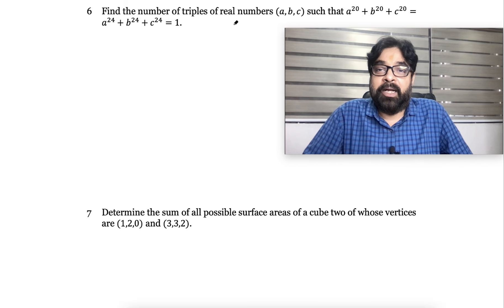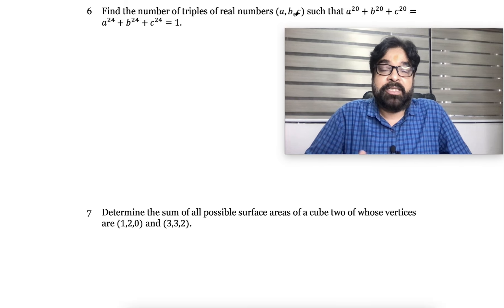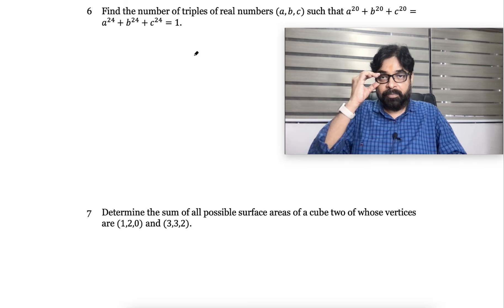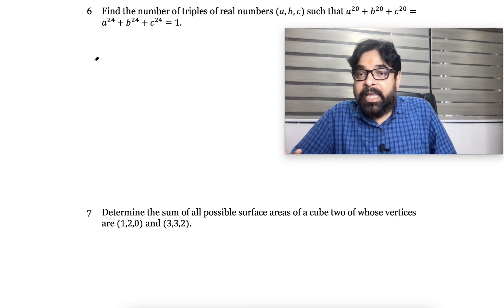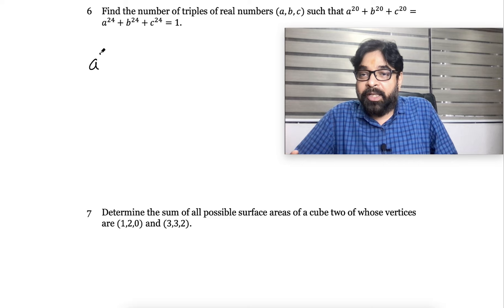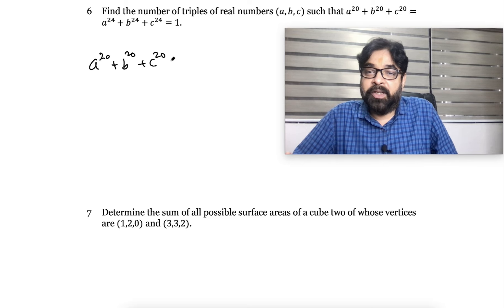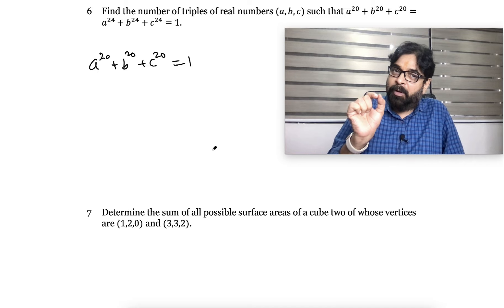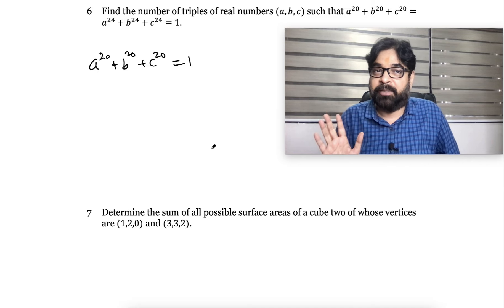Find the number of triples (A, B, C) such that A²⁰ plus B²⁰ plus C²⁰ is equal to 1. From this condition alone, you have to figure something out. What do you have to get?